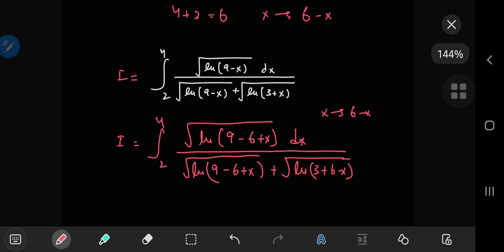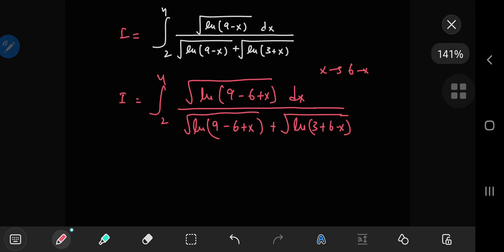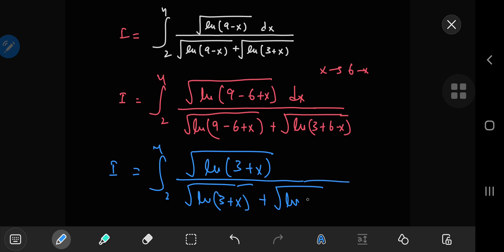So how does this actually simplify things? Let's check. Let me pick a different color to highlight stuff. So I have finally the integral from 2 to 4 of the square root. Now here I have 9 minus 6, which is 3 plus x, divided by the natural log of 3 plus x in the square root, plus the natural log of 9 minus x.